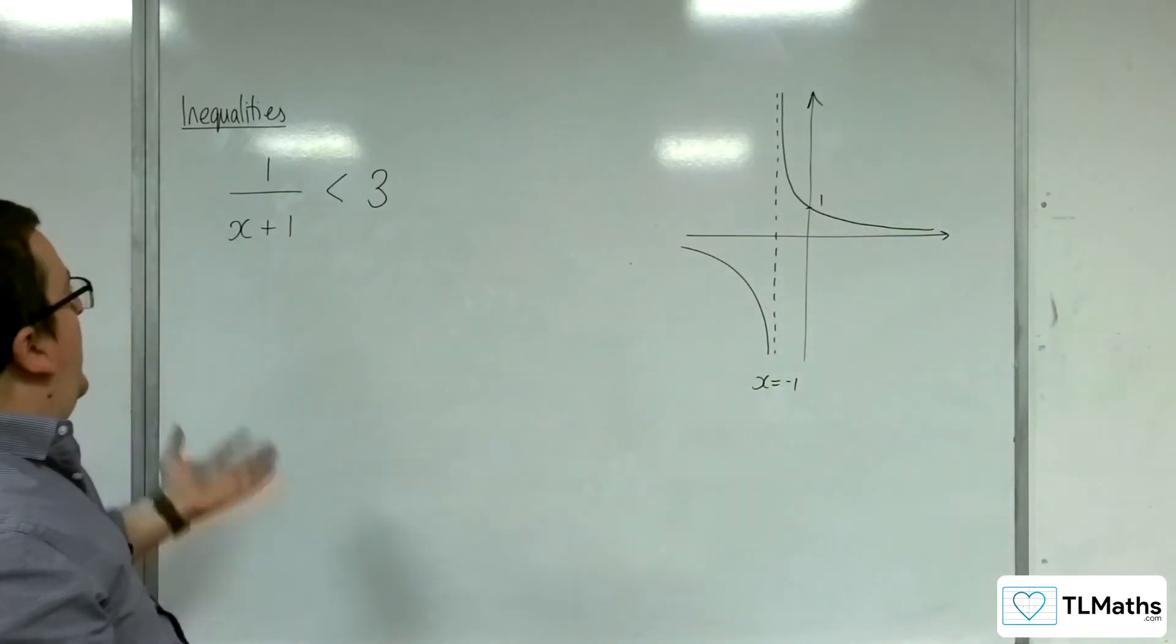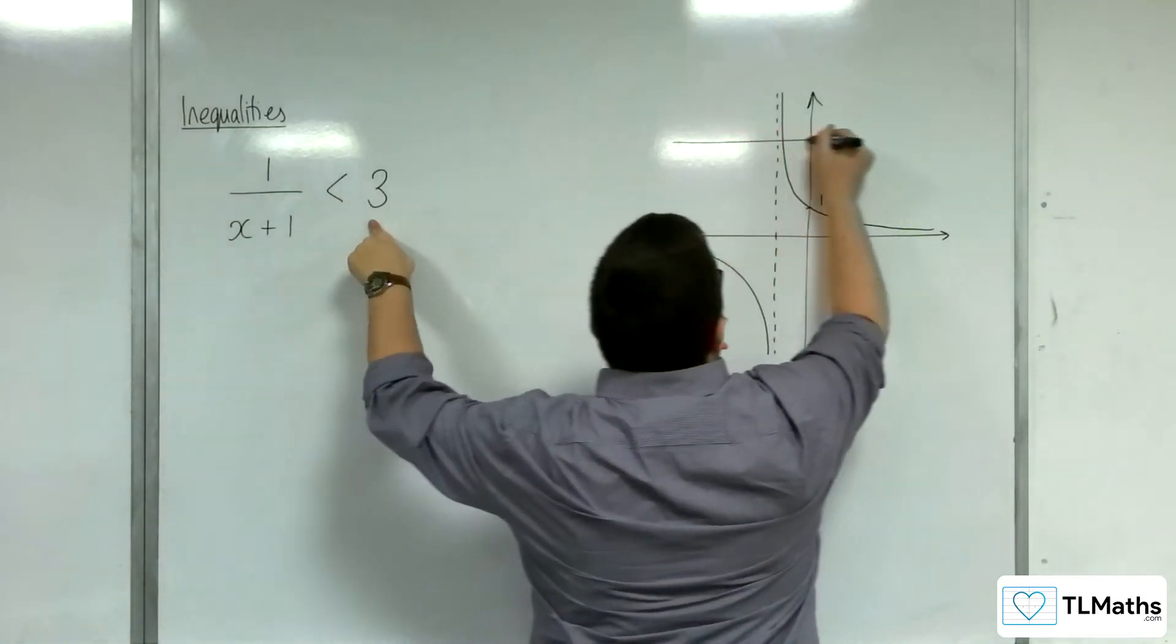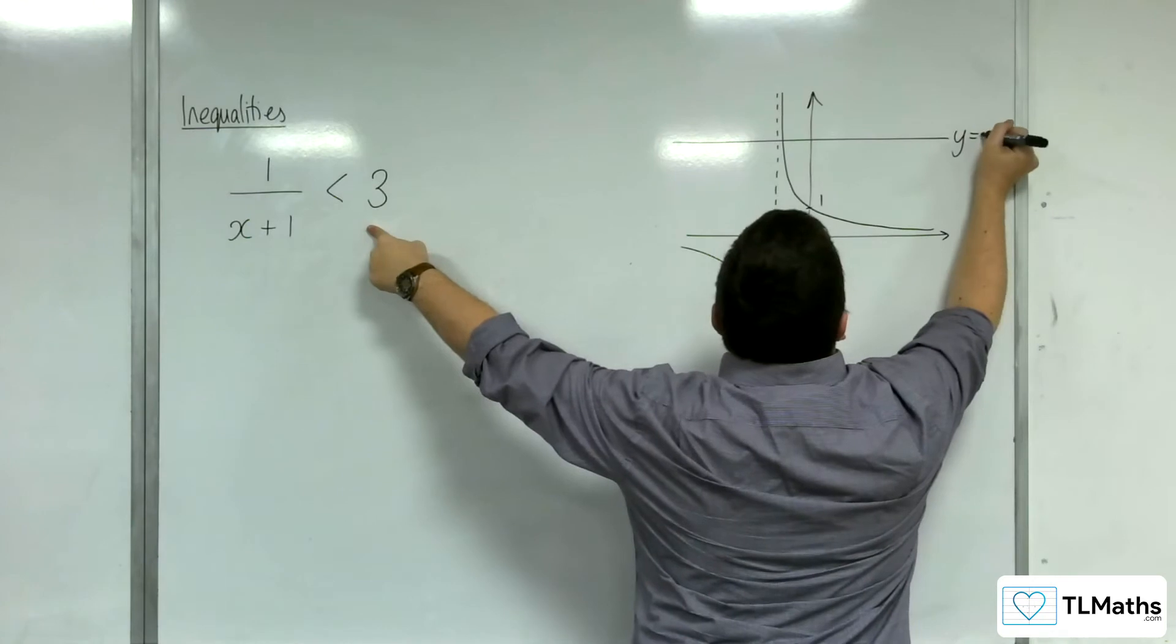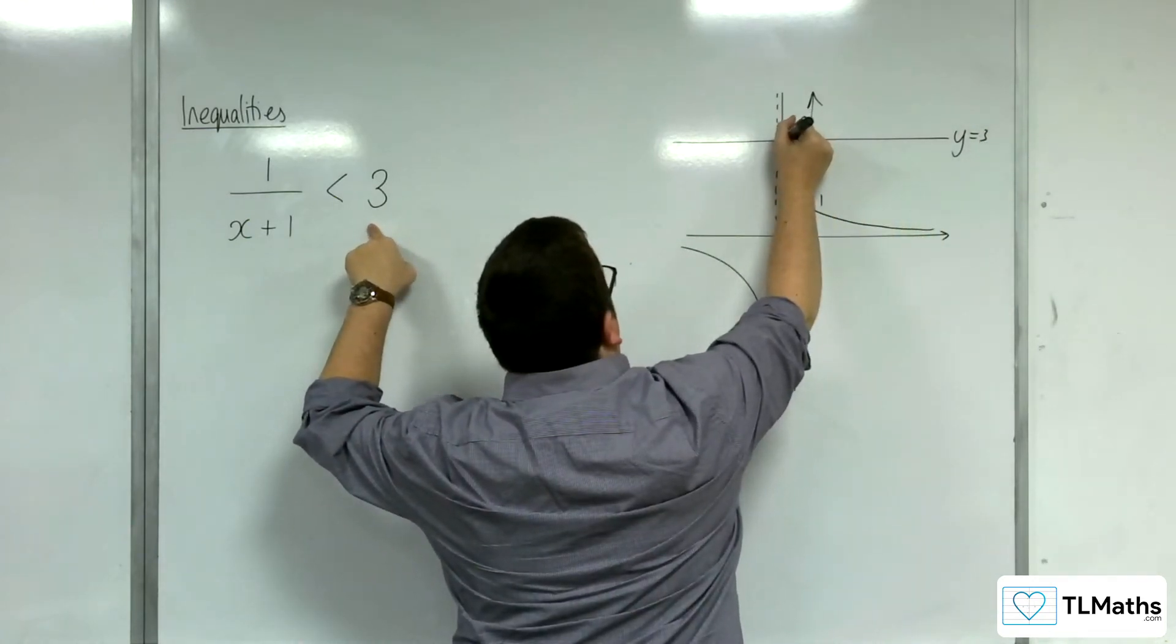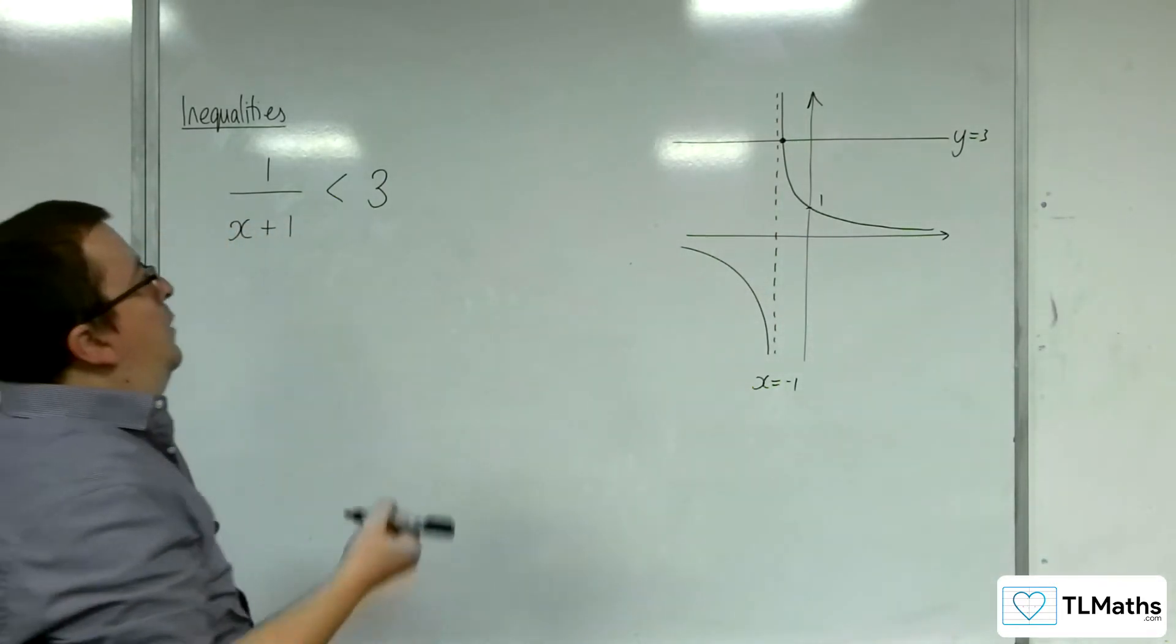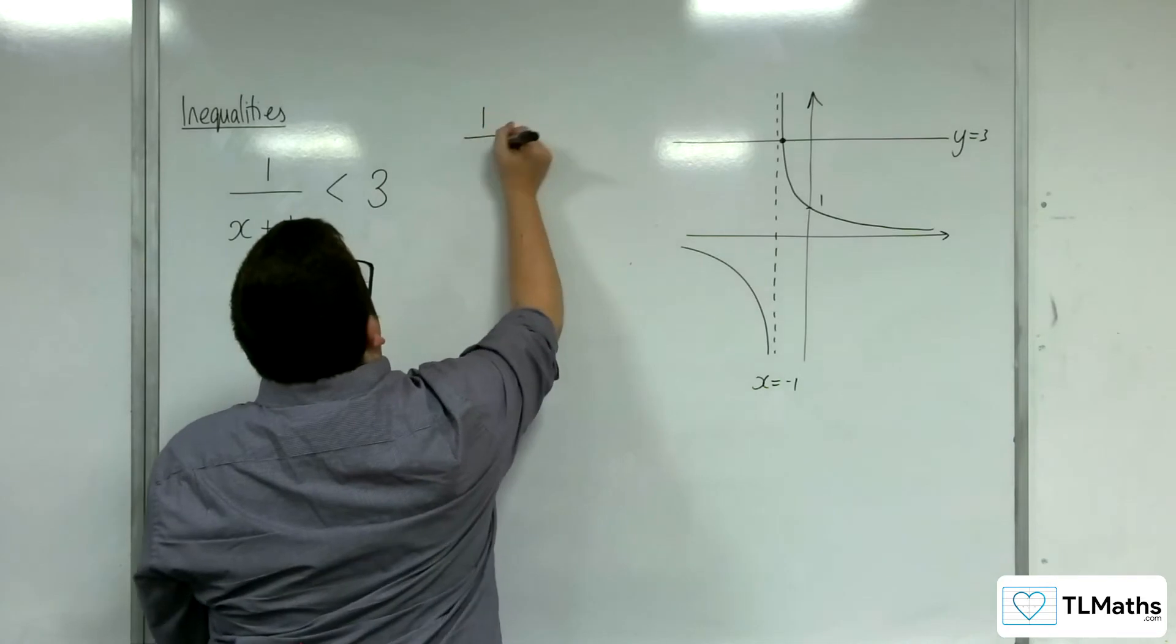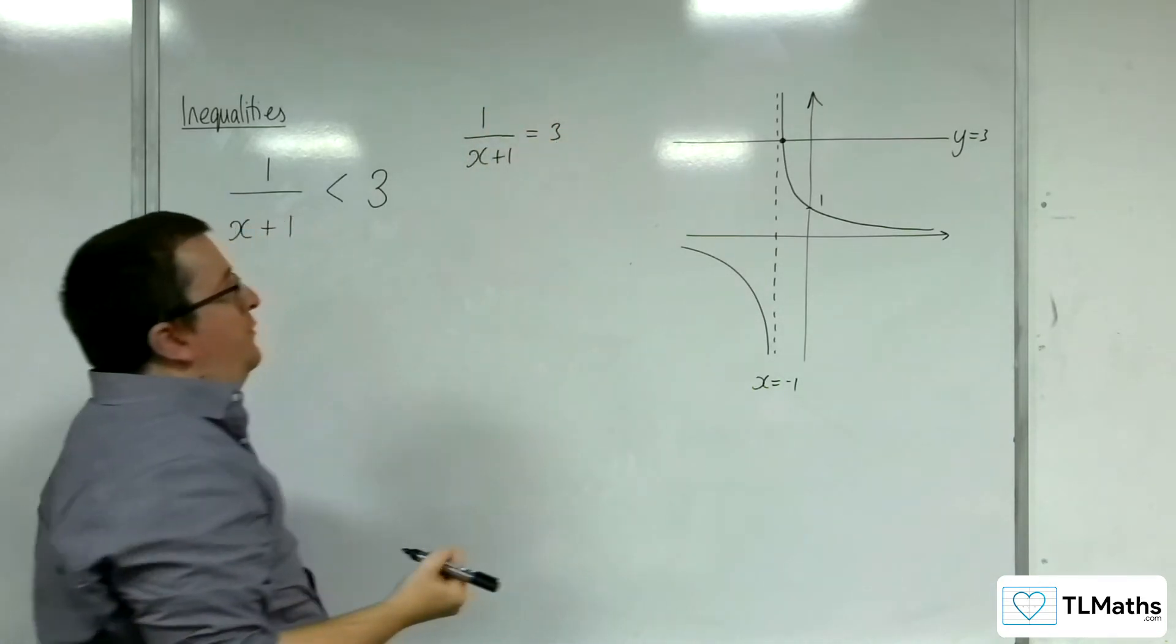Once we've got our sketch, I'm also going to draw the line y equals 3. And you can see there is this single point of intersection. Now, I am interested in working out what that value is. So, what I do is I put 1 over x plus 1 equal to 3 and aim to solve that equation.